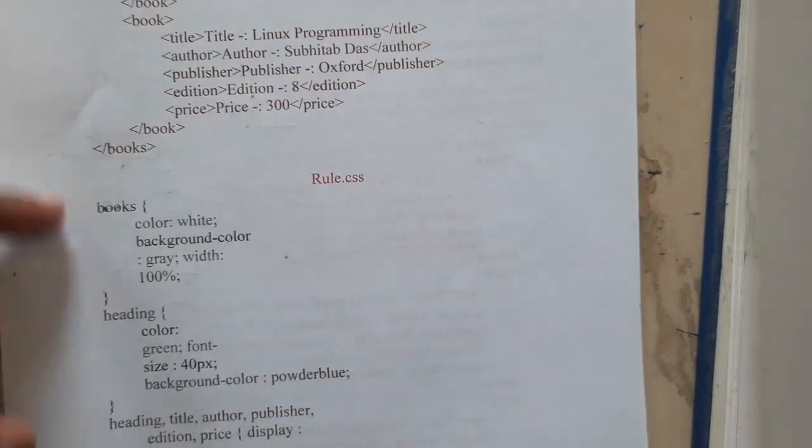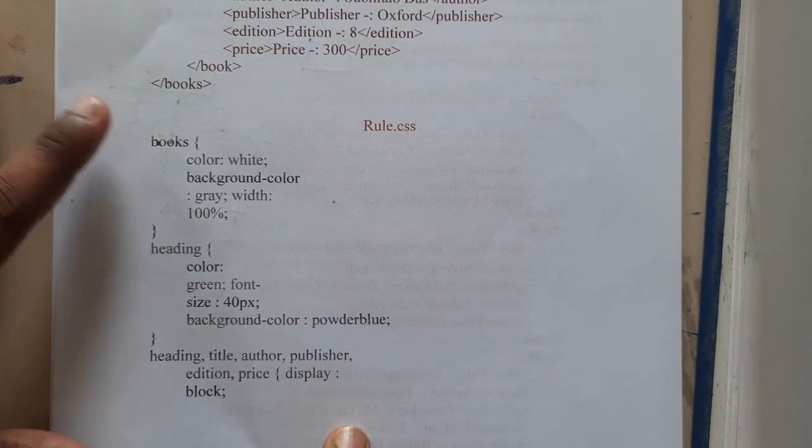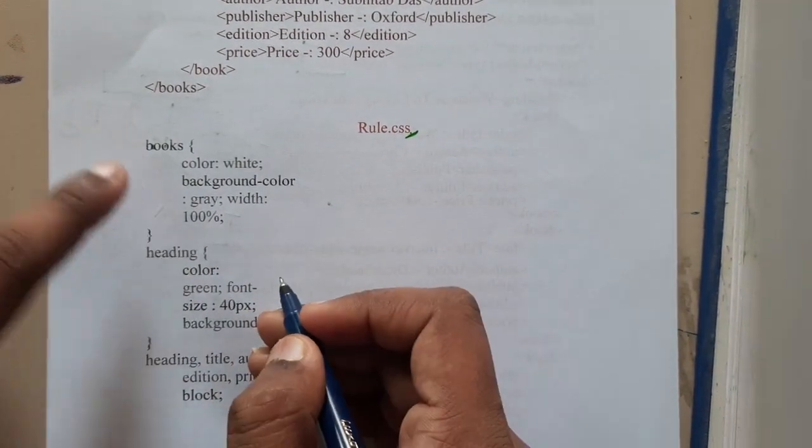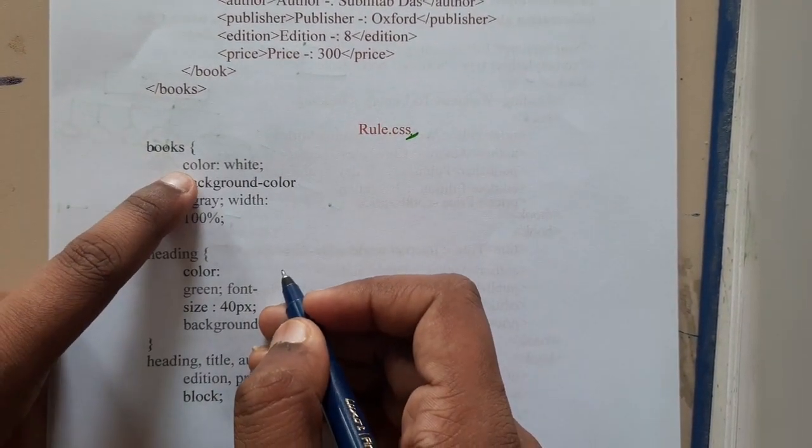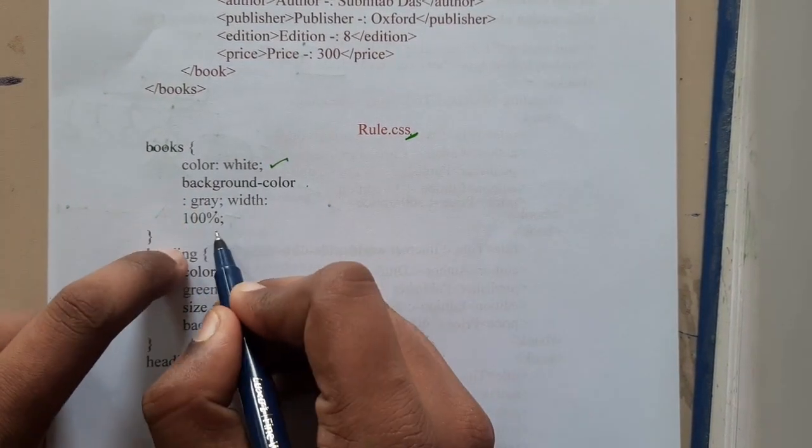Now how you can add it to look good? This is what you will be doing. You will be writing a separate file for rule.css and you will be writing the CSS properties.